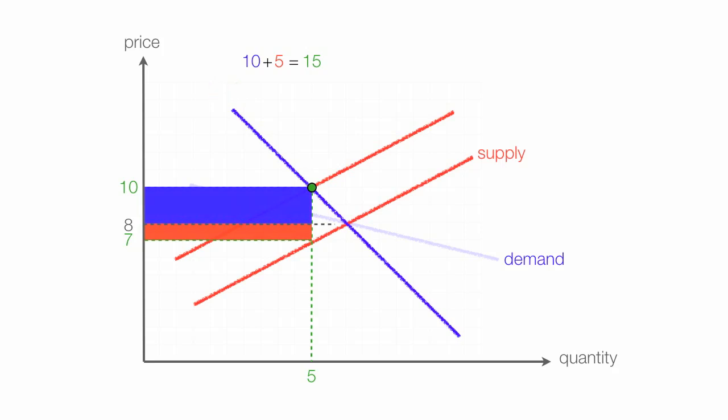So revenues went up, and the consumer's bearing a larger portion of the tax. So when I went from a relatively elastic to a relatively inelastic demand, revenues went up, consumers paid more, but producers paid less.